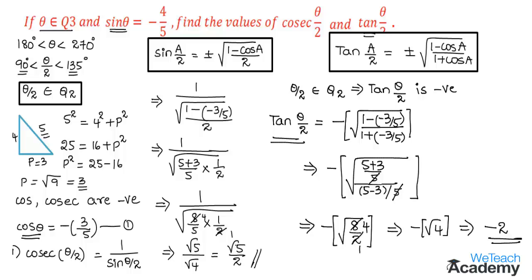To conclude: the value of cosecant theta by 2 is root 5 divided by 2, and the value of tan theta by 2 is minus 2. Note the formulas: sin a by 2 equals plus or minus under root of 1 minus cos a divided by 2, and tan a by 2 equals plus or minus under root of 1 minus cos a divided by 1 plus cos a. Hope you understood the concept — do like and subscribe to vteachacademy.com. Thanks for watching.